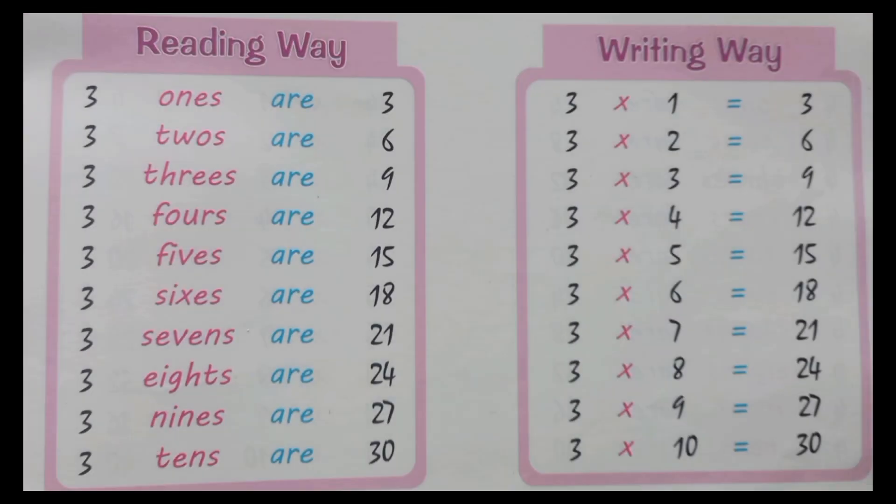Table of three. Three, one's a three. Three, two's a six. Three, three's a nine. Three, four's a twelve. Three, five's a fifteen.